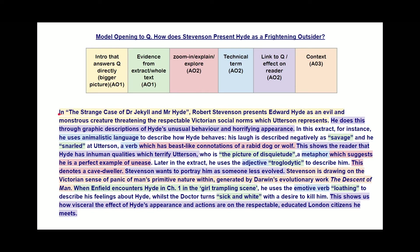What we notice is that this response answers the question directly — getting straight into how Edward Hyde is being presented as an evil and monstrous creature. We even get some context thrown in there, nicely embedded. Don't do any preambles; just start answering the question directly like this. Then we start getting on to methods — his use of graphic descriptions — which is our AO2, and what effect they have.